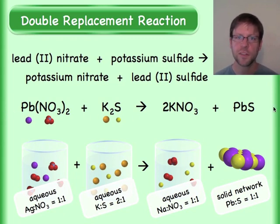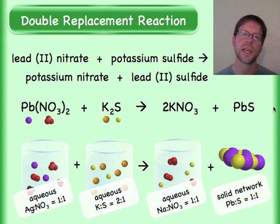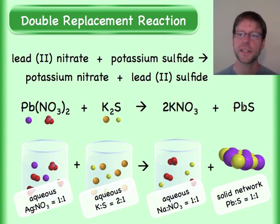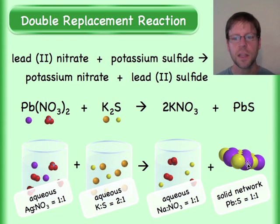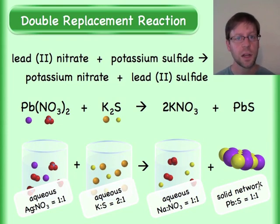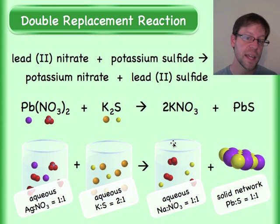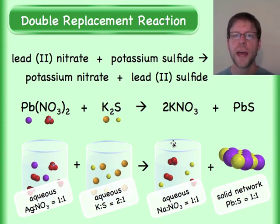Make sure you're keeping track of what the charge of the ion is so that you can get the appropriate empirical formulas. In this particular case, lead sulfide is not soluble, so it would be the solid that comes out of solution as a precipitate, and everything else would be left in solution.